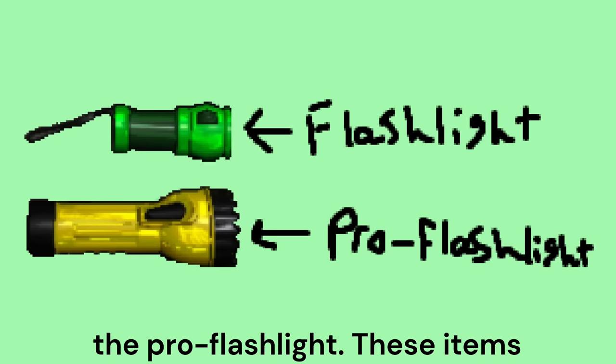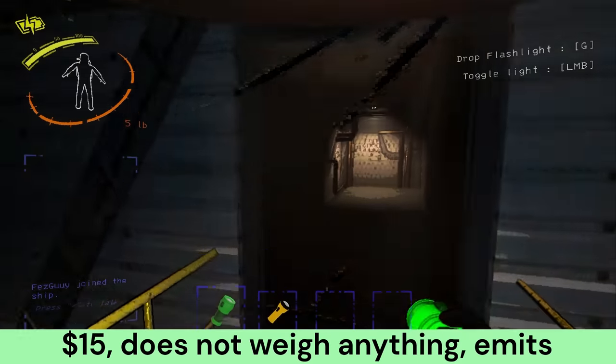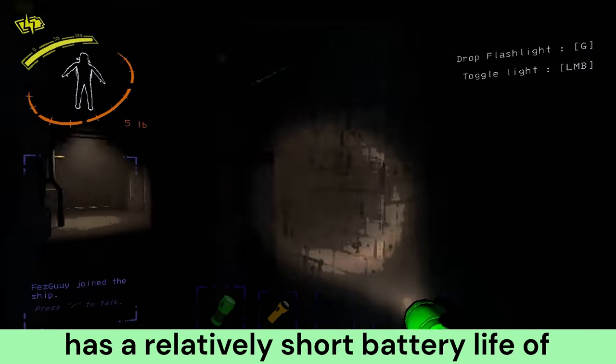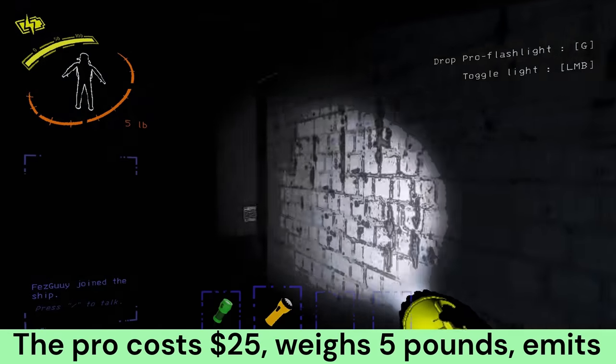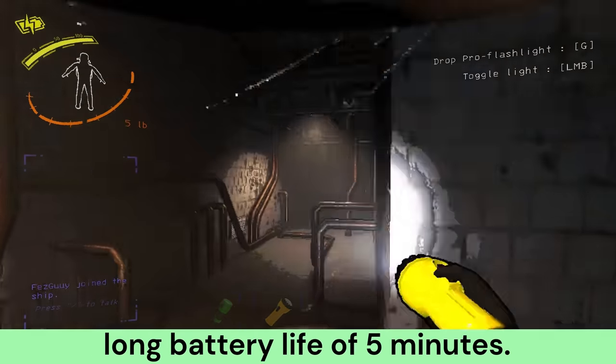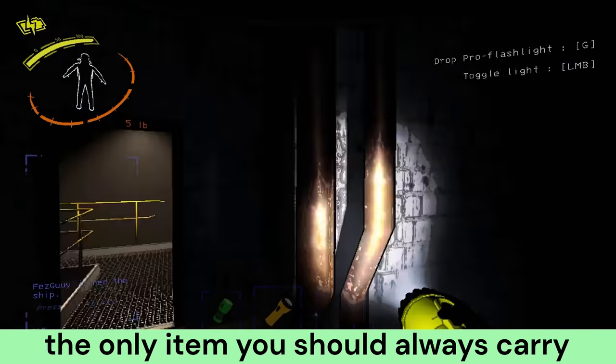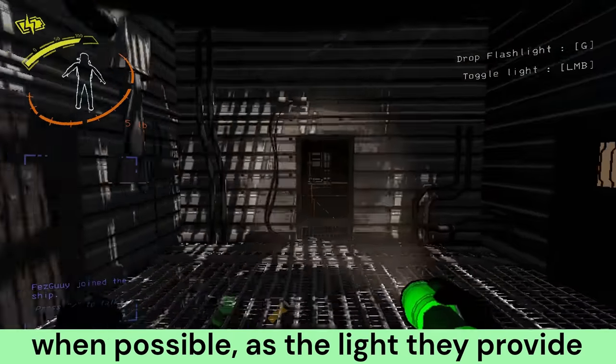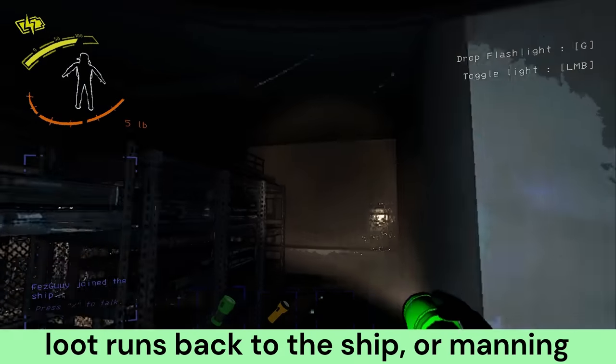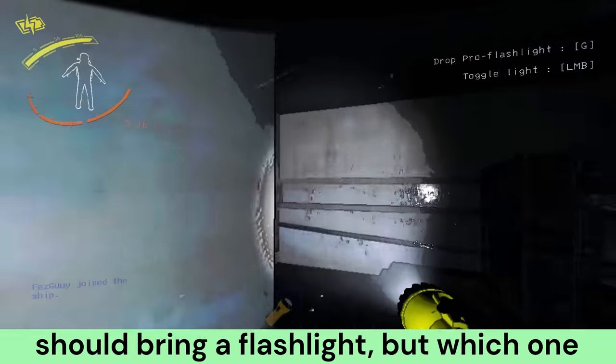Flashlights are the only handheld item at the moment to have variants. The flashlight costs $15, does not weigh anything, emits a dim cone of light where you look, and has a relatively short battery life of 2 minutes and 20 seconds. The pro costs $25, weighs 5 pounds, emits a bright and far-reaching cone of light where you look, and has a comparatively long battery life of 5 minutes.